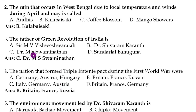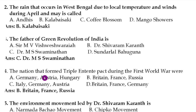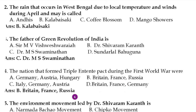Question number three: the father of the Green Revolution of India is dash. The correct answer is option C, Dr. M.S. Swaminathan. Question number four: the nations that formed the triple entity pact during the First World War were dash. The correct answer is option B, Britain, France and Russia.